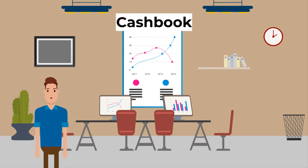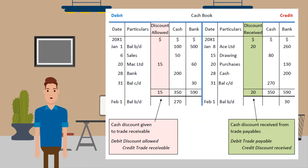Now let's look at the cash book — specifically interpreting a three-column cash book. Example: On January 28th, $200 was debited to the cash account and credited from the bank account, representing withdrawal of funds from the bank for office use. The balance brought down on February 1st is: cash account $270 debit (current asset), bank account $30 credit (current liability — bank overdraft).